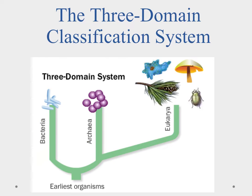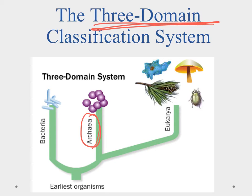Currently we understand that we have three domains of living things. The first is the archaebacteria, which probably most represent what life was like when it first started on the planet — these ones live in harsh environments. Closely related to the archaebacteria are the bacteria, and both of these are going to be single-celled organisms. They don't have any special structures inside — no nucleus — it's just kind of like a sack of living goo.